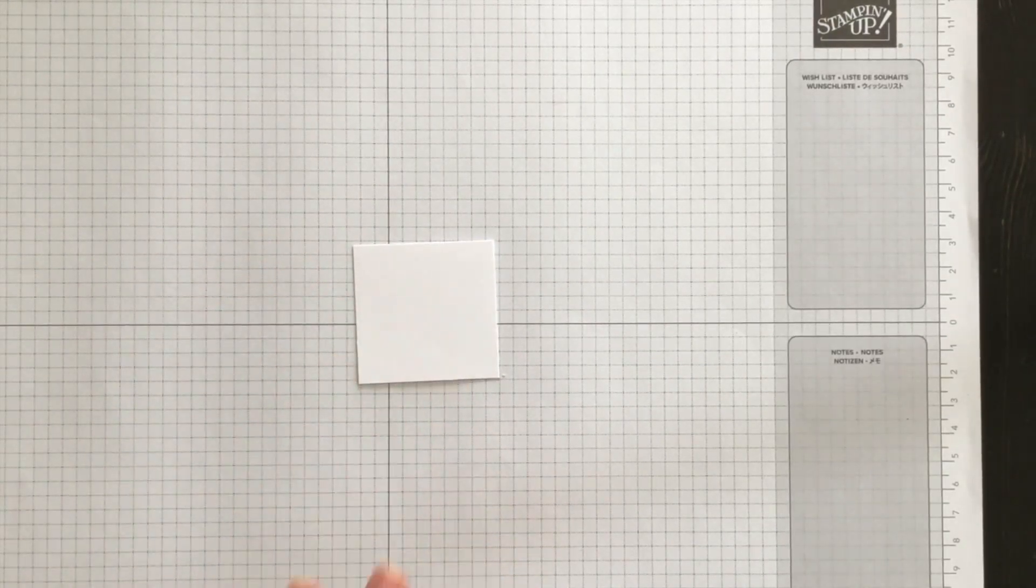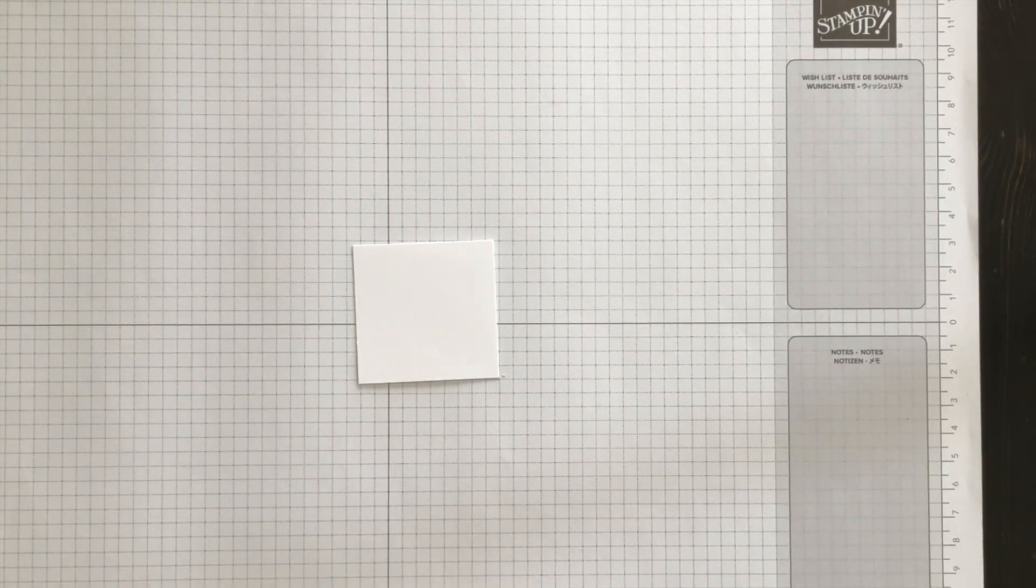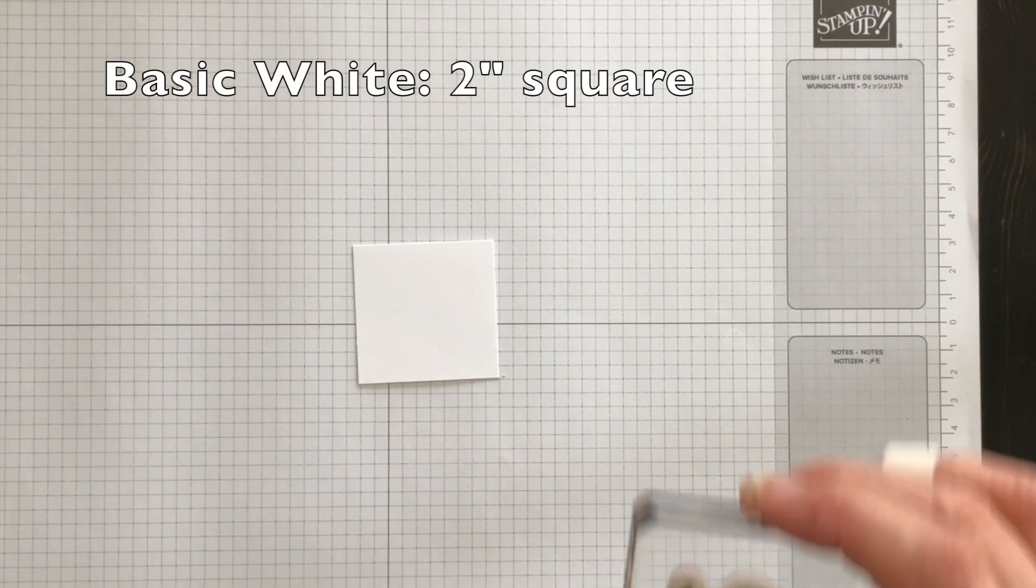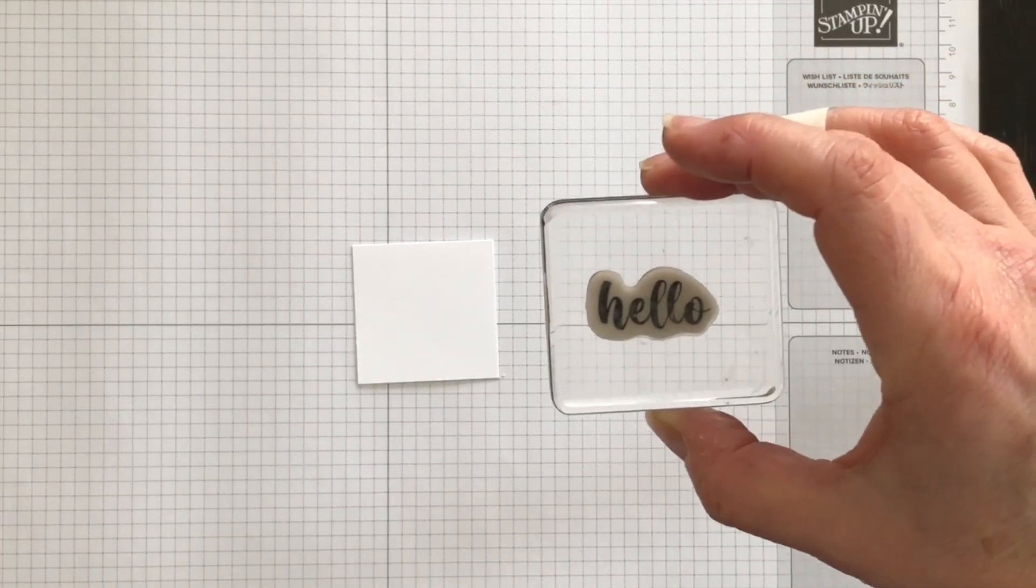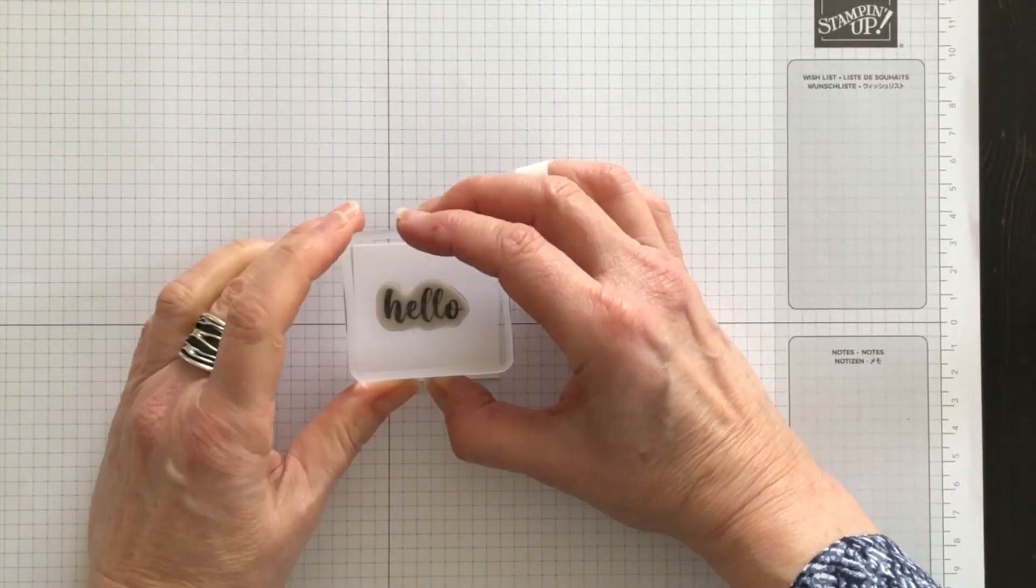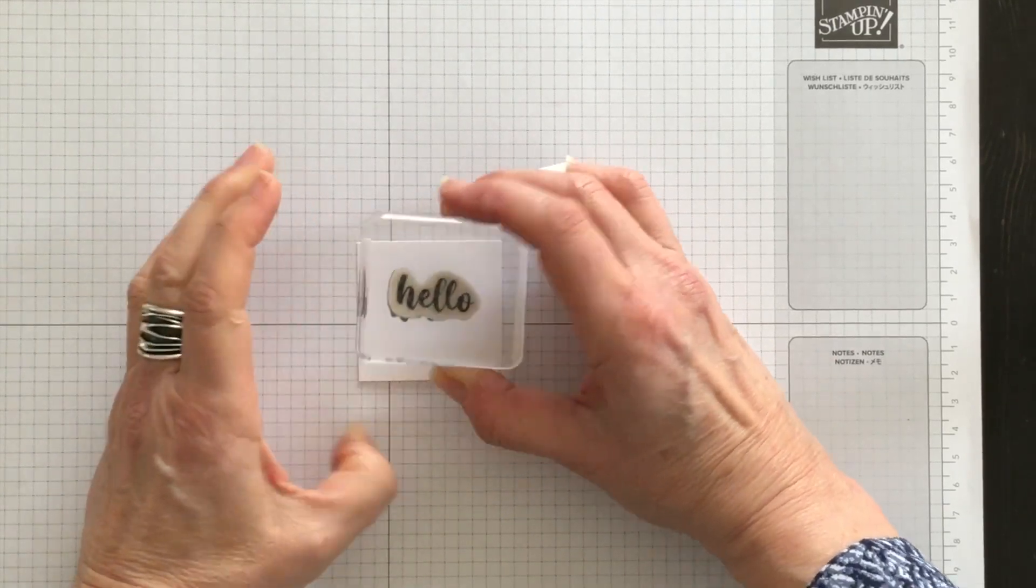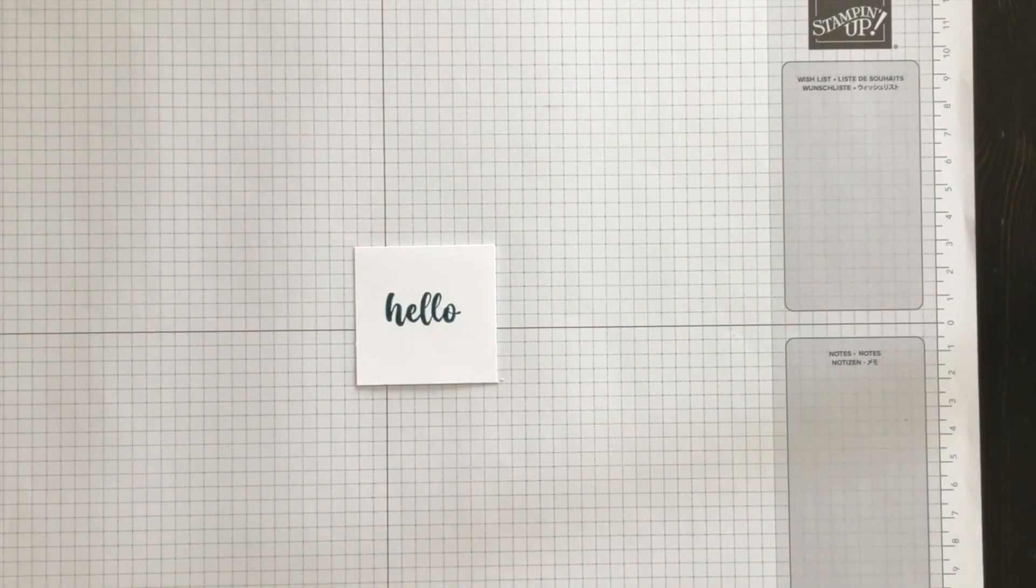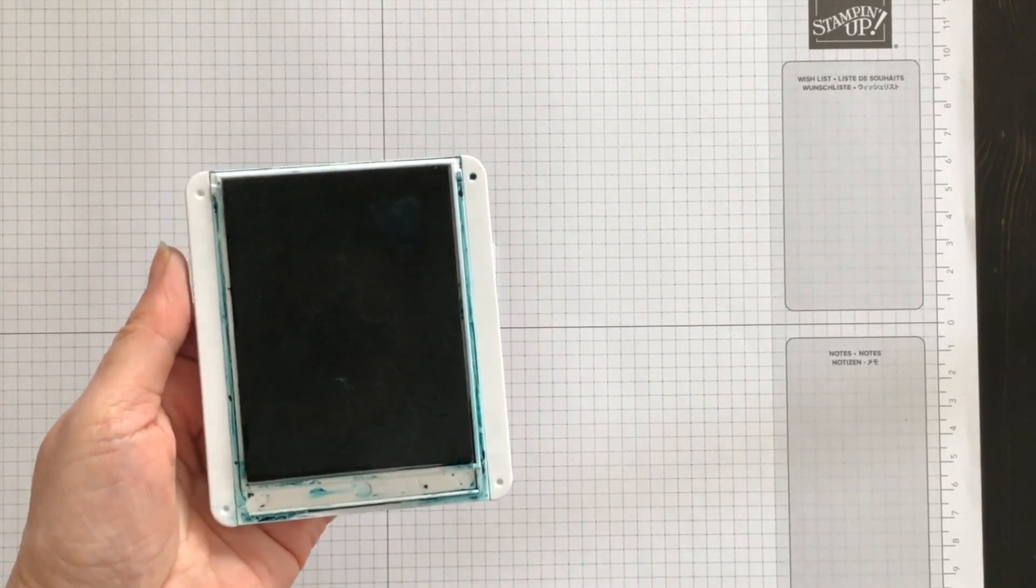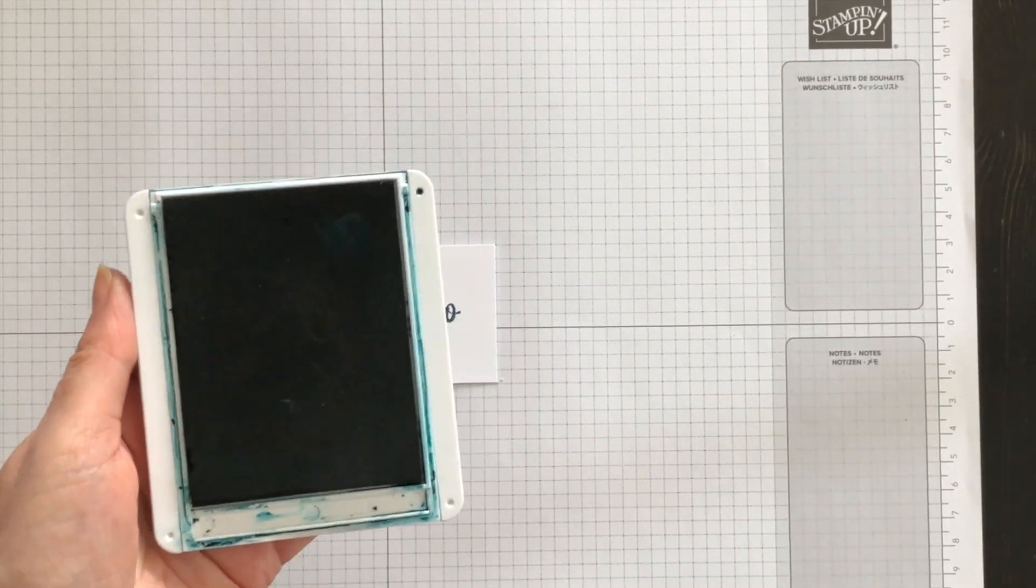Before I show you how to create this unique fun fold, I want to get a few elements ready to add to my card. So I have the Hello image from the Irresistible Bloom stamp set, and I'm going to stamp it down using Pretty Peacock ink. Yes, you heard me correctly. Pretty Peacock, I can't say it properly.